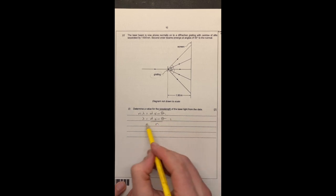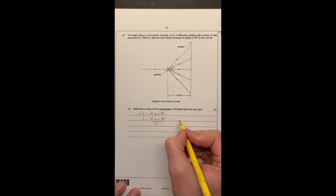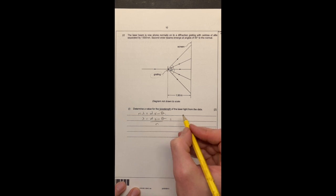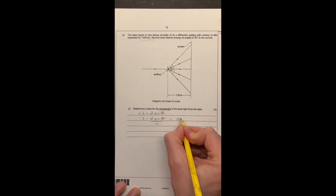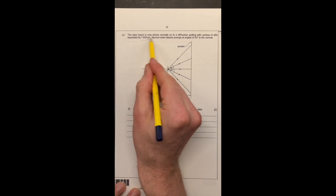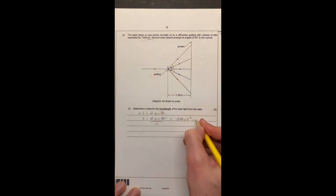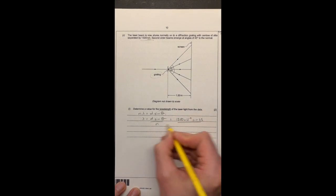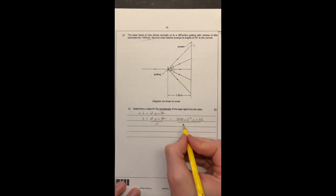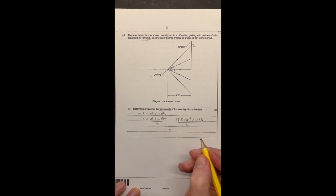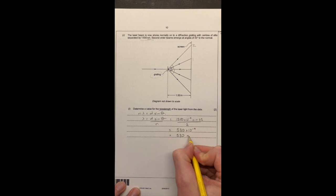So wavelength equals d sine theta over n, and I'm going to substitute in the different values, so d is, sorry, it's up here, it's 1500 times 10 to the minus 9 meters, because it's nanometers. We've got sine theta, so that's sine of 45, all over, because it's n, if you look, that's n0, that's n1, that's n2, so that's the angle that's being measured, so it's over 2, all of that equals 530 times 10 to the minus 9 for consistency, which is equal to 530 nanometers.